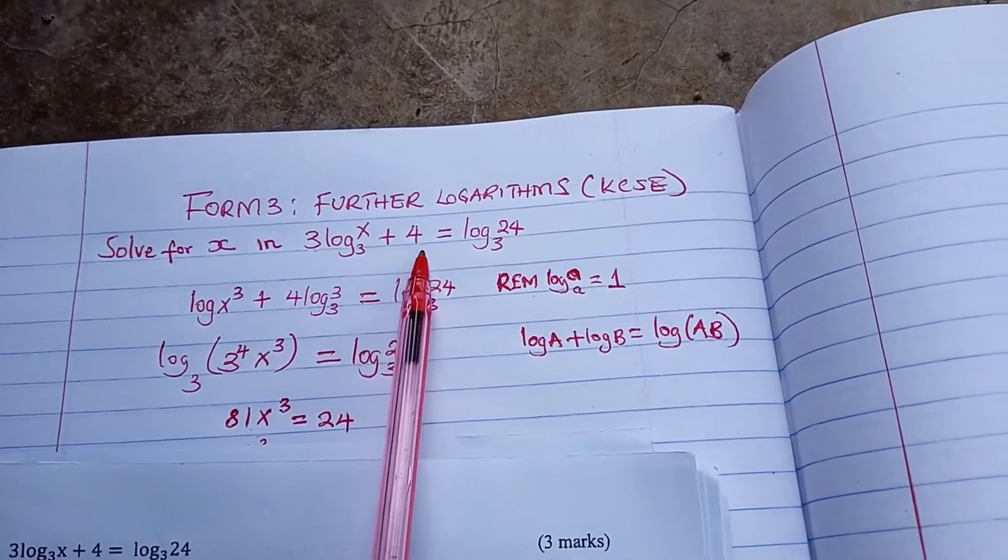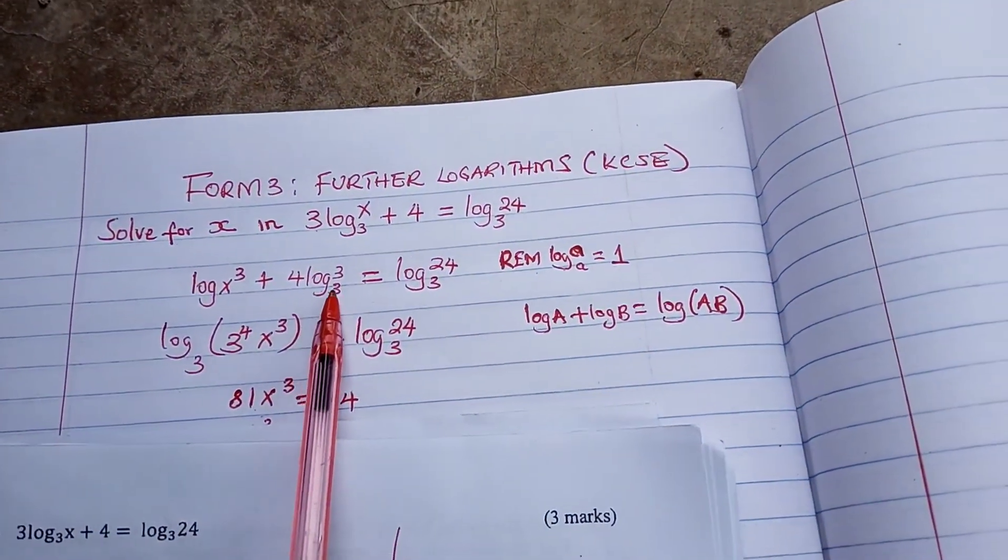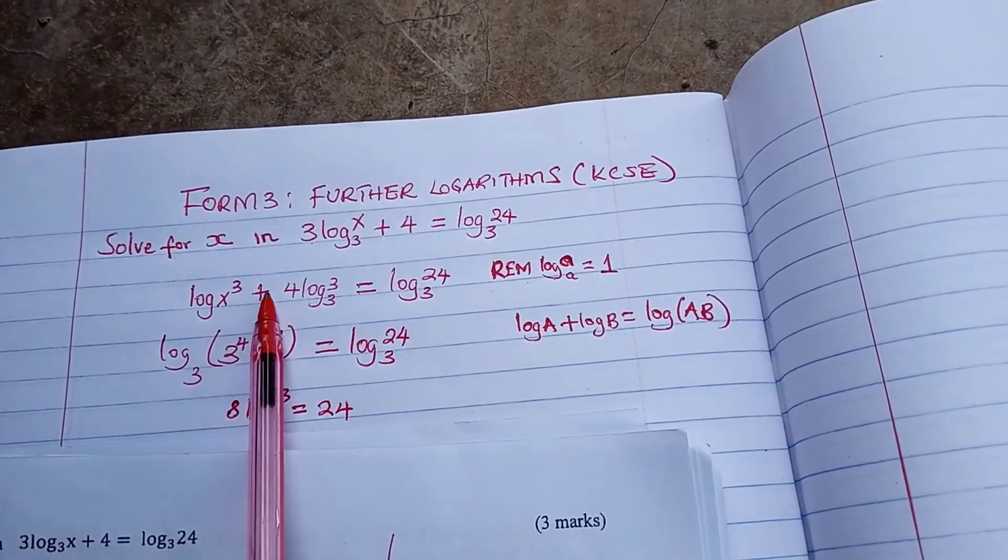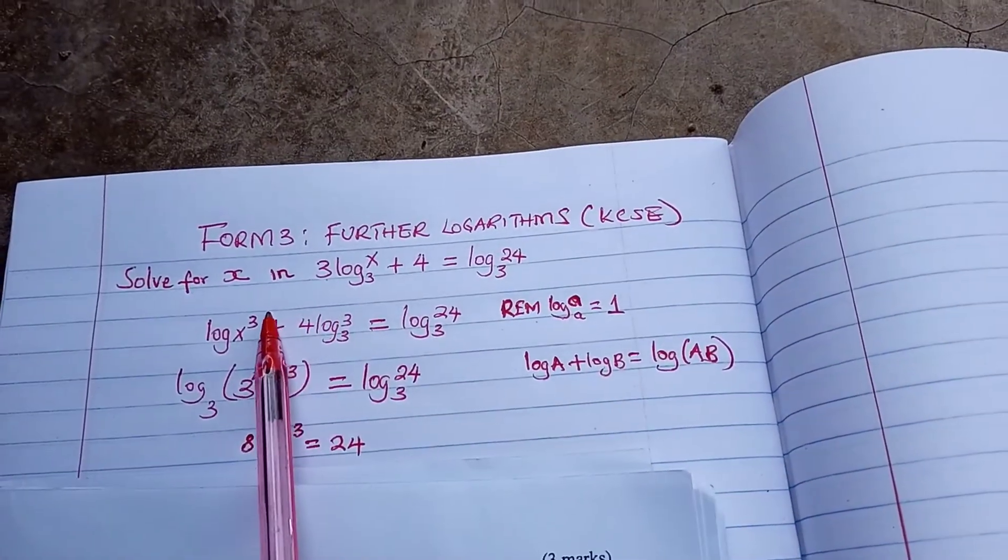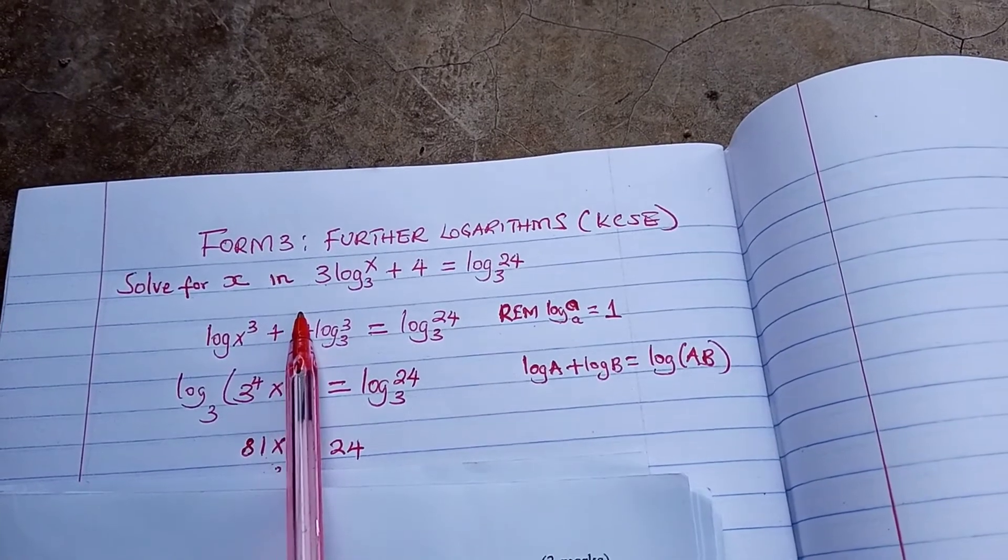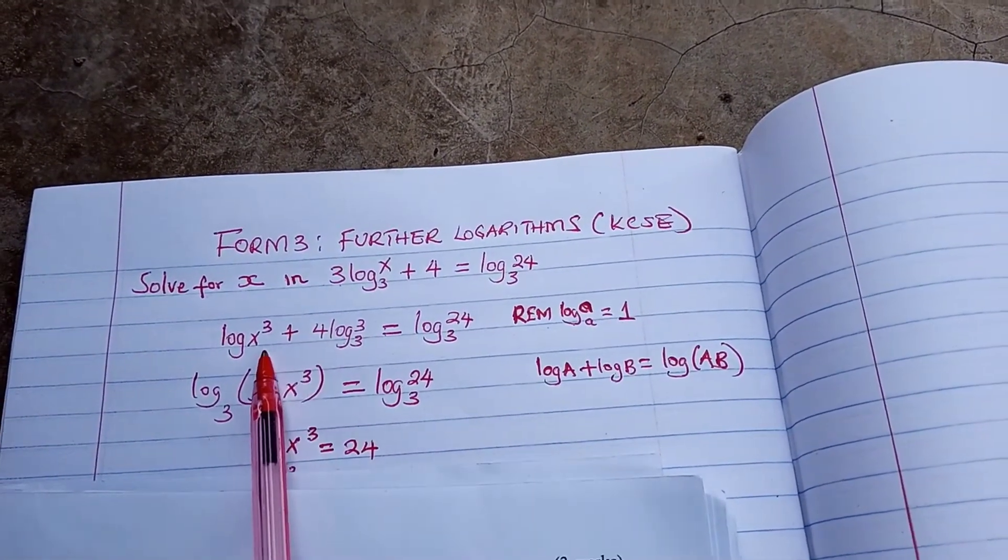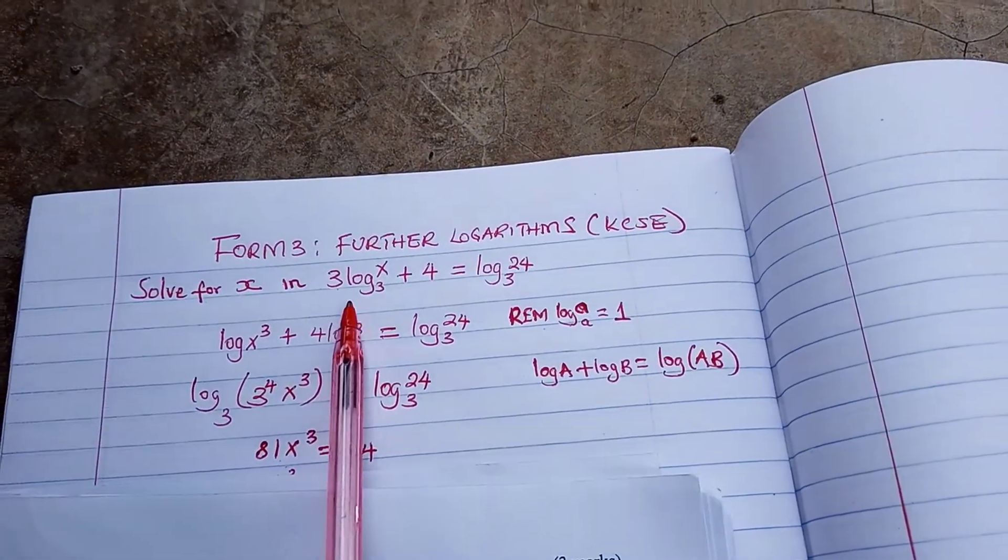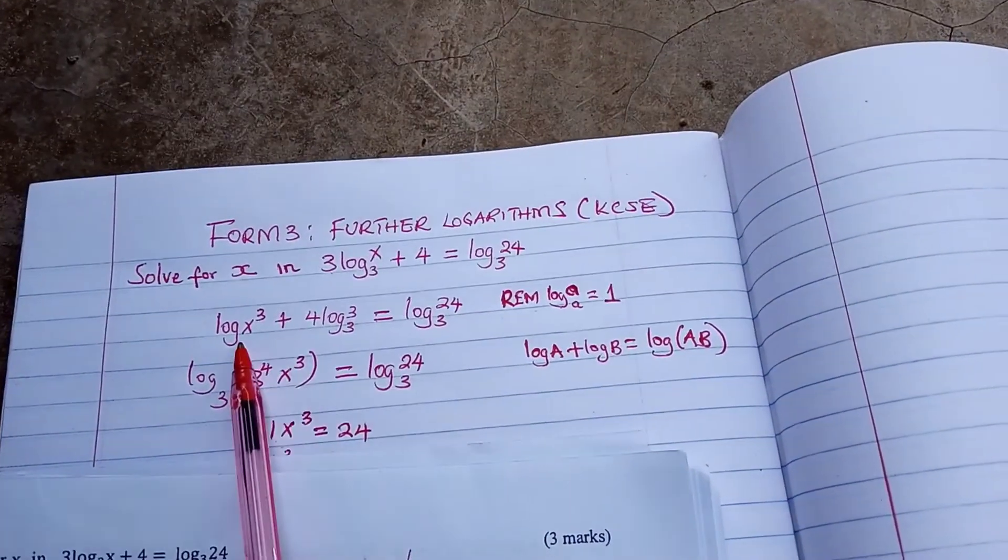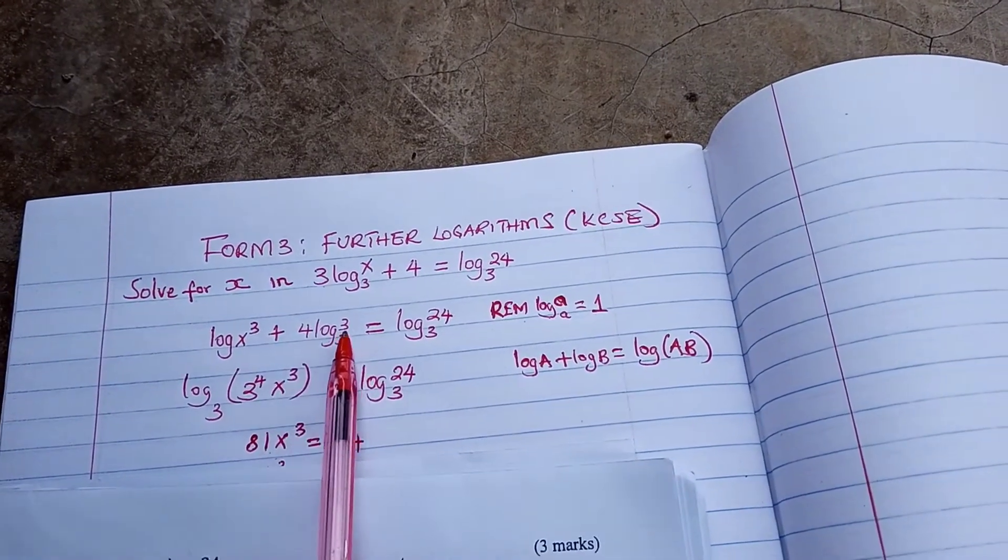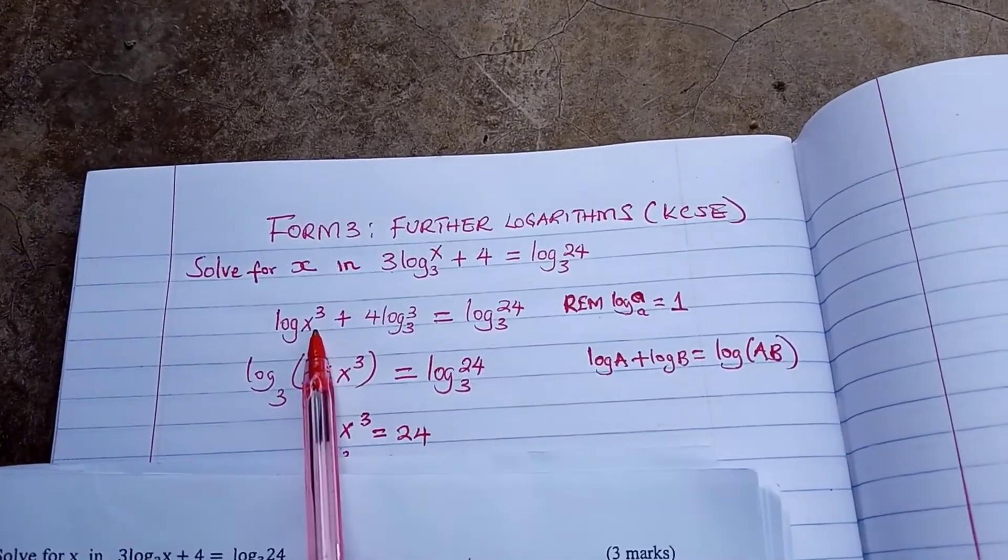So now we are going to use another rule here. We have if we have n log x, then that is the same as log x to power n. That is what we are using here. 3 log x is going to become log x to power 3. So we are going to have in the second step here, remember the base is 3 here so don't be confused.